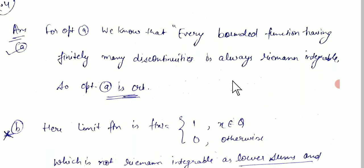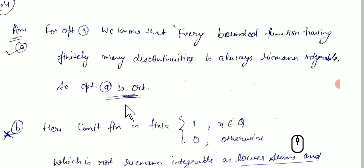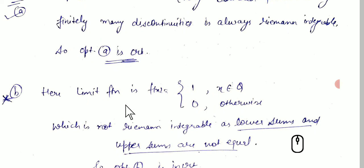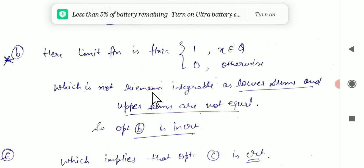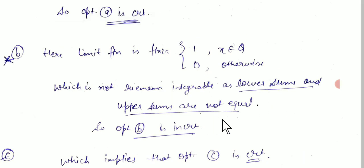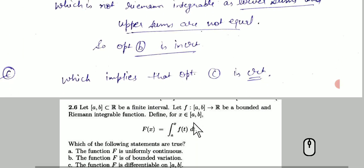For question 4, option A: every bounded function having finitely many discontinuities is always Riemann integrable — this statement is correct. For option B: the limit function f(x) = 1 when x ∈ ℚ (Dirichlet-type function) — since the lower sum and upper sum are not equal, this is not integrable, so option B is incorrect. This implies option C, the converse statement, is correct.